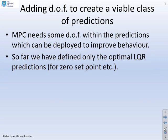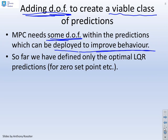Now we want to add some degrees of freedom in order to create a class of predictions. At the moment we've just got a single prediction. It's not a class. We want to have some class over which we can do an optimization. We need some degrees of freedom within our predictions which can be deployed to improve behavior. Don't worry about the fact I've got improved there because you're thinking, I've already said this behavior is the global optimum. How can I make it better? But this will relate back to constraints.